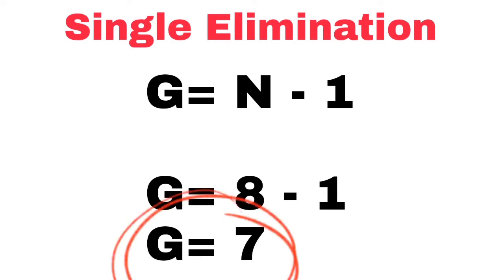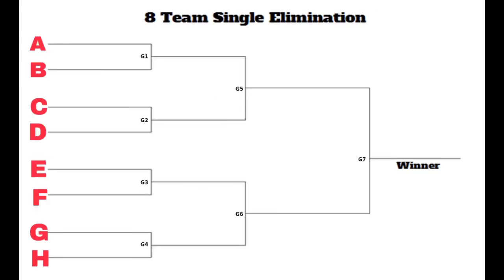That means there are 7 games to be played when we have 8 entries. Now let's elaborate further on the single elimination tournament using a diagram. In making the single elimination diagram, I am going to use letters to stand for the teams.